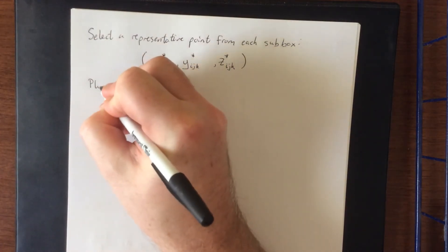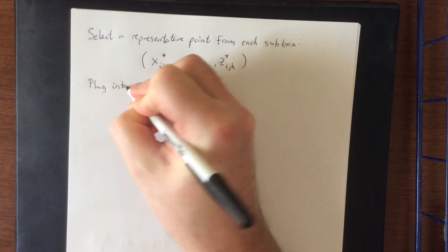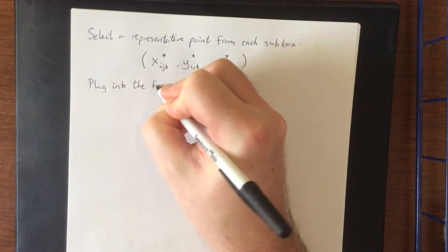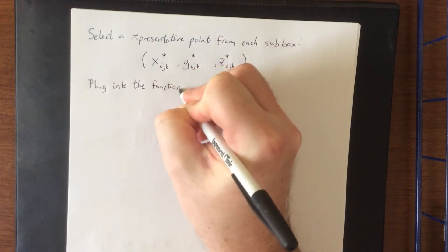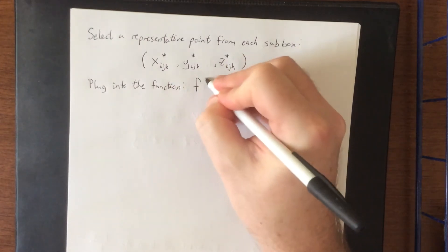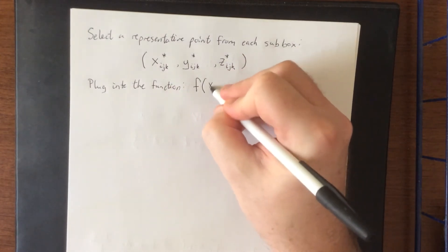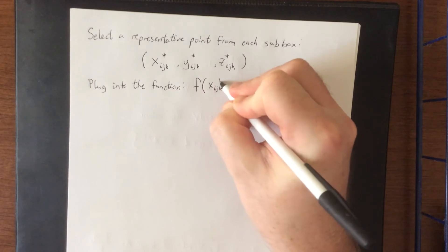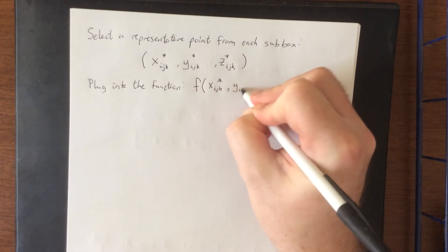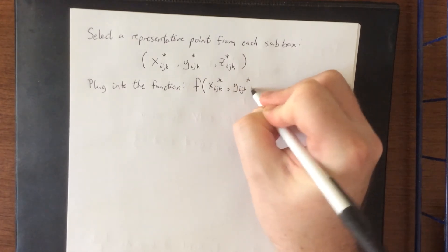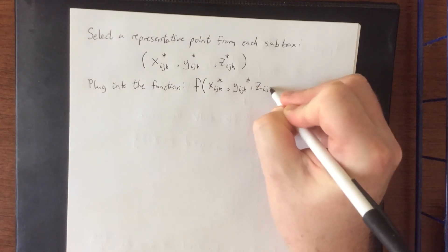Once we plug this into the function, we will have a function value that will be known as f of x sub i,j,k star, y sub i,j,k star, and z sub i,j,k star.